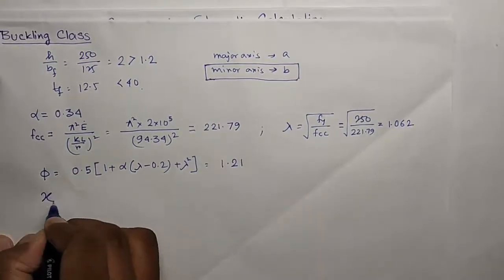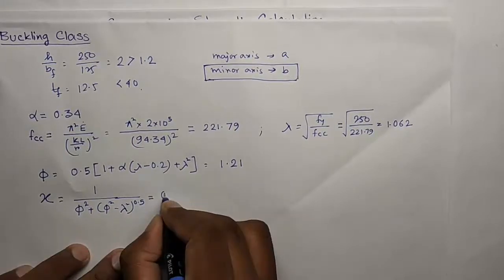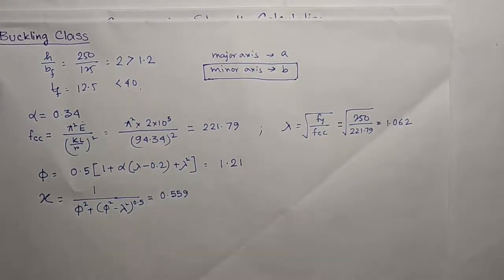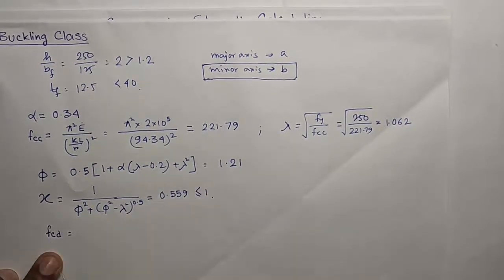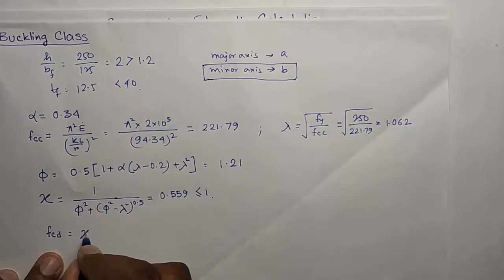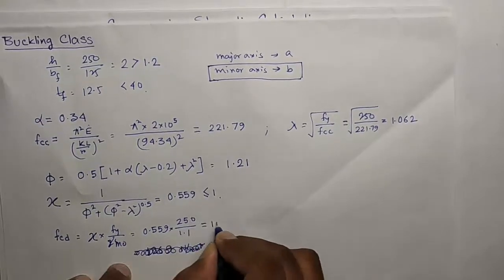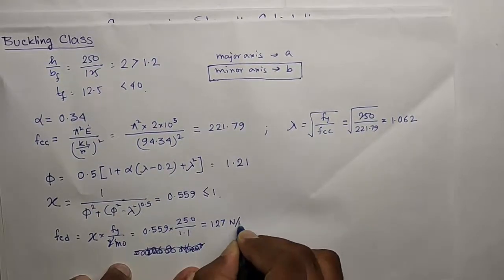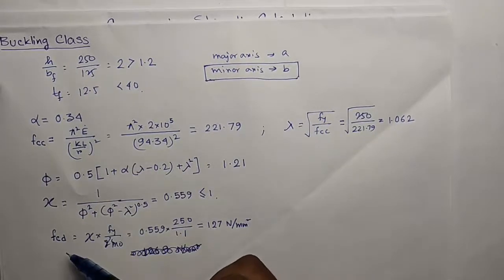Now the value of Xi is 0.559. This is called the stress reduction factor. The Xi value will always be less than equal to 1. The value of Fcd is nothing but Xi into Fy by Gamma M0. You will get 127 Newton per millimeter square. So this is the detailed procedure to calculate the Fcd.